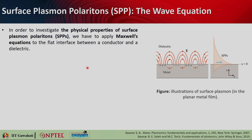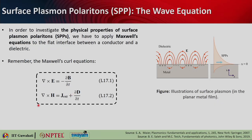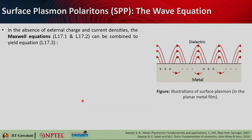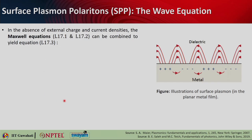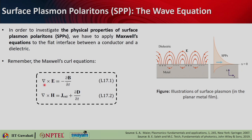In order to investigate the physical properties of surface plasmon polaritons, we have to apply Maxwell's equations to the flat interface between a conductor and a dielectric. If you remember the Maxwell's curl equations - curl of E equals minus ∂B/∂t, curl of H equals J_external plus ∂D/∂t. If you consider the case where there is no external charge and current density, you can get rid of those terms. You can combine these two and write curl of curl of E equals minus μ₀ ∂²D/∂t².